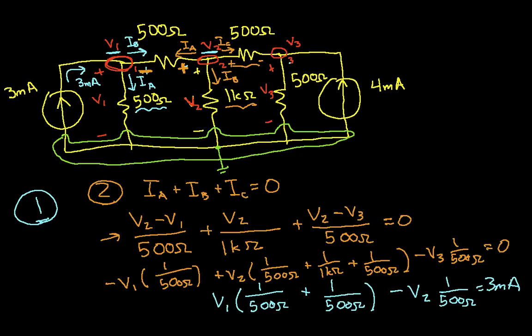So this then is my second equation. I've got two equations now, I have three unknowns, I need to get a third equation. And I will do that by looking at the voltage at node 3.